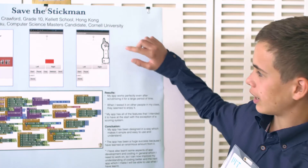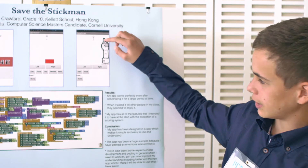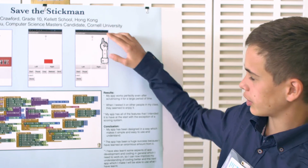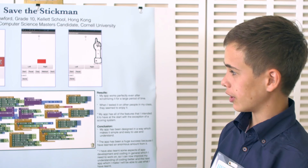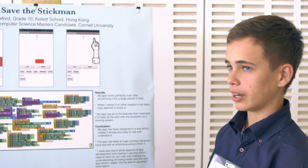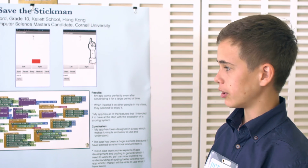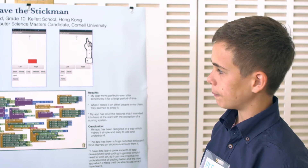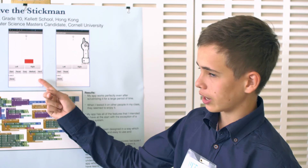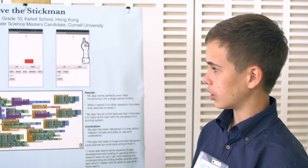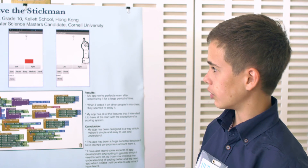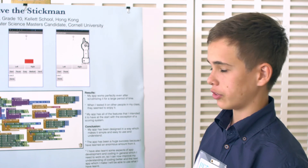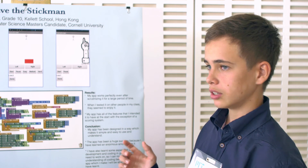The aim of it is to stop the sick man from getting hit by the arm. You do that by clicking on the left and right buttons. You can also select a difficulty level, which will decide how fast the arm appears, making it harder or easier.